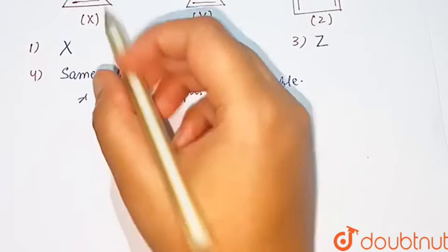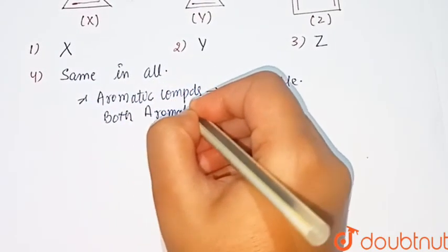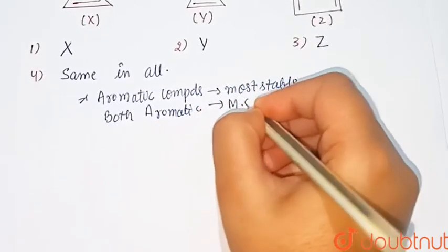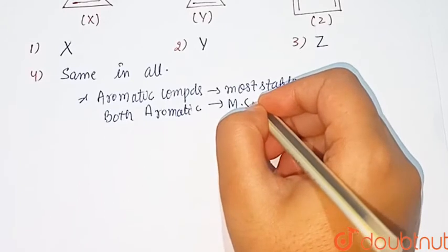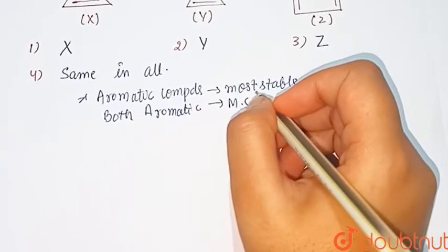If we can get both rings are aromatic, we will assume that this will be the most stable. So that molecule will have least barrier to rotation.